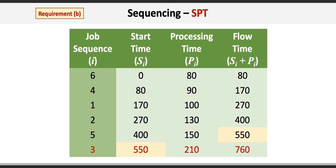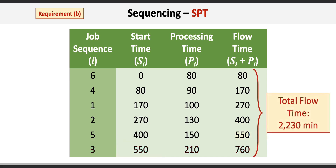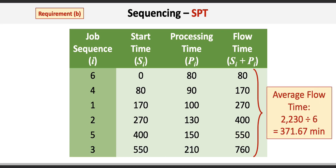The makespan under SPT is the same as under FCFS at 760 minutes. However, the total flow time under SPT is 2230 minutes, resulting in an average flow time of 371.67 minutes. The shortest processing time rule therefore results in a reduced average flow time of 371.67 minutes — a difference of 85 minutes compared to the first-come-first-serve rule.